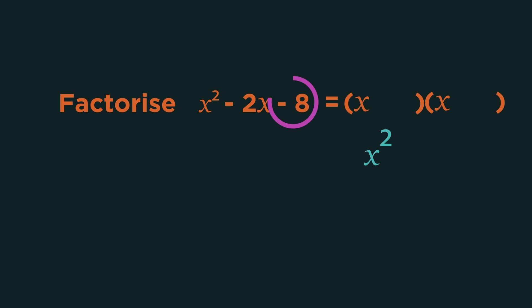Now look at this number. What multiplies to give negative eight? Two and four, and one and eight. Now which combination of those add to give minus two? Plus two minus four gives us minus two.